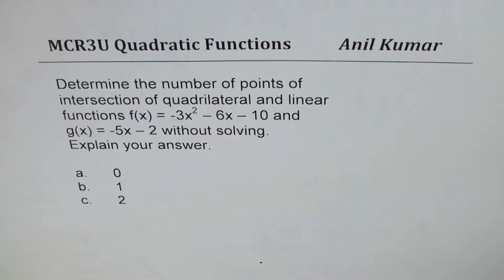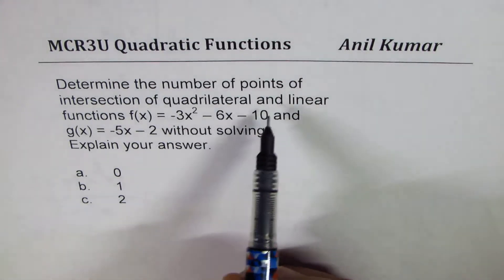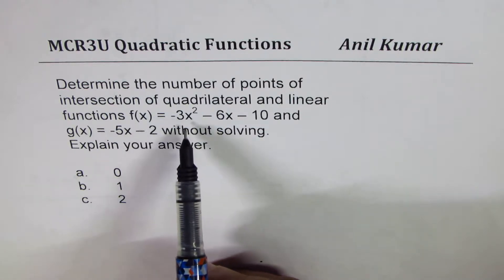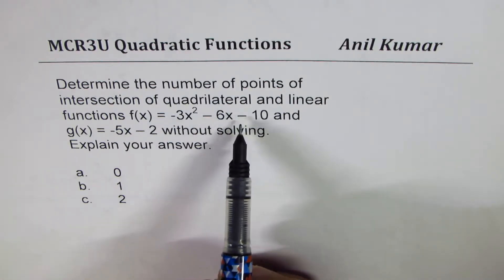I'm Anil Kumar sharing with you a multiple choice question on quadratic functions. The question here is: determine the number of points of intersection of quadratic and linear functions f(x) = -3x² - 6x - 10 and g(x) = -5x - 2 without solving. Explain your answer.